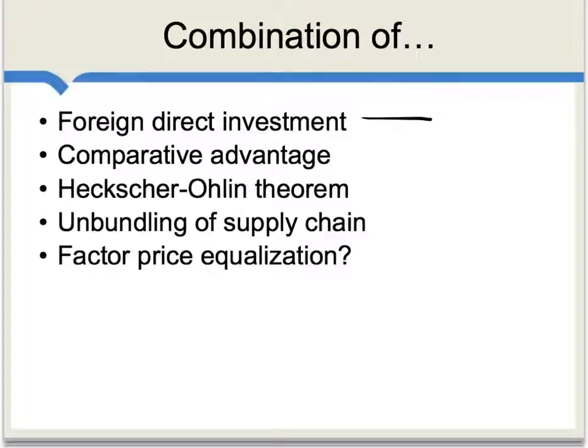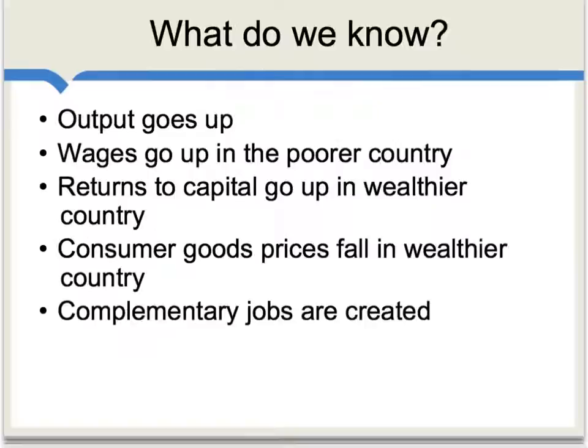The economics of offshoring involve several different elements, including foreign direct investment, comparative advantage, the Heckscher-Ohlin theorem, the unbundling of the supply chain, and possibly factor price equalization. We have separate videos on all of these, so I'm not going to cover them again. But each is very relevant to understanding offshoring. If I had to identify a single key point, it's simply that offshoring represents another way of capturing international gains from trade.